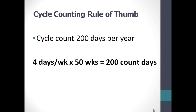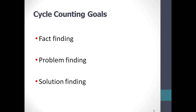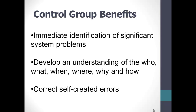An audit trail of once a year is too long — there have been so many intervening transactions, you can't figure out where you went wrong. If you counted twice a year it's a shorter audit trail, but still an awfully long one. Four times a year is better still. Why is it better? Because we're getting closer and closer in time to where the disconnects occur. If we're counting every day, we're going to find the problems really close to when they occurred, and that gives us a chance to fix them. The cycle counting goals are fact-finding, problem-finding, and solution-finding. Start off — don't jump into any cycle counting program wholeheartedly until you've gone through and used a control group.